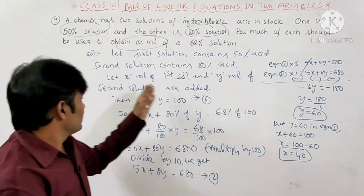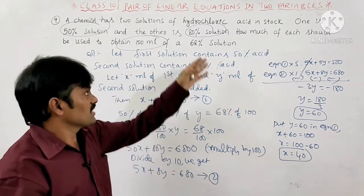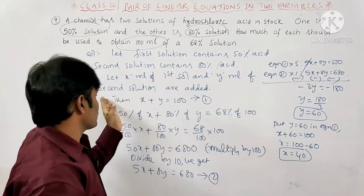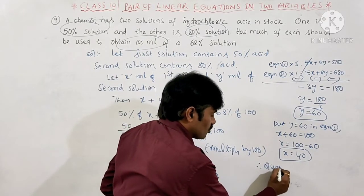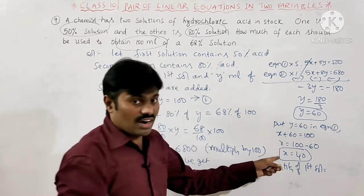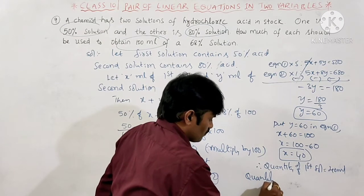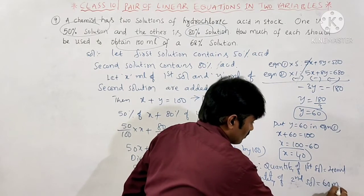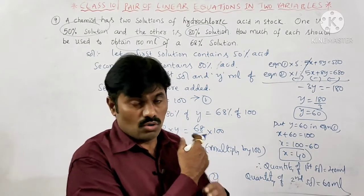X equals 40 is the quantity of the first solution. So the quantity of the first solution is 40 ml, and the quantity of the second solution is 60 ml, giving a total of 100 ml. This is the solution of question number 9.